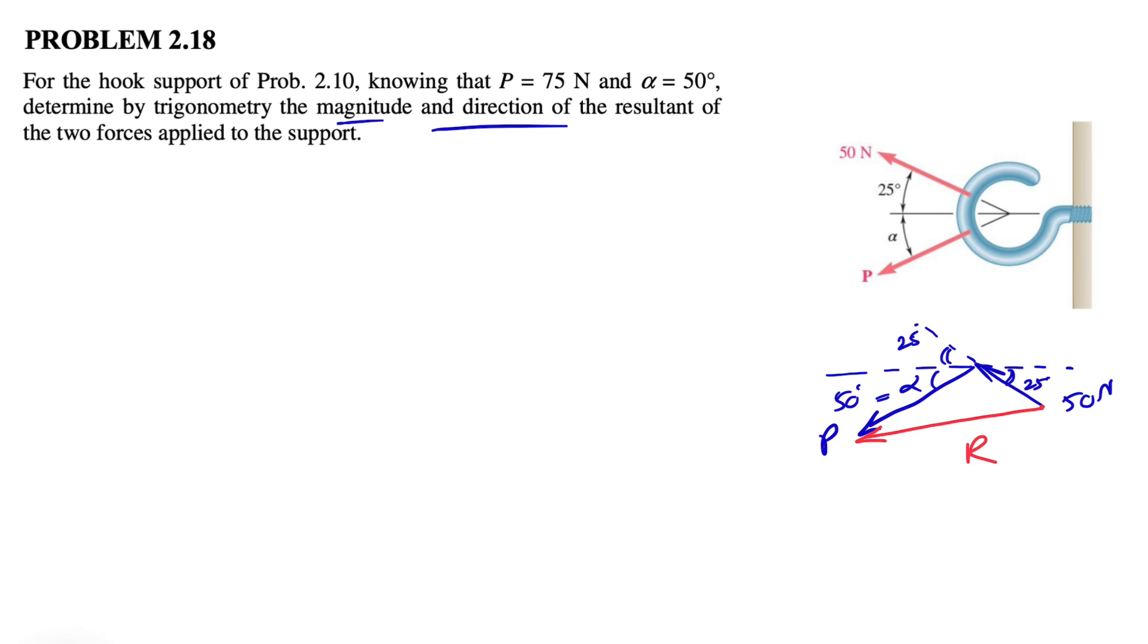We're going to use the law of sine and cosine, but before that, we need to find some angles. If we call this angle here beta, we can add angles easily. The reason is that alpha plus beta plus 25 degrees is going to be 180. So basically, beta is 180 minus alpha, which is 50, minus 25. So beta would be 105 degrees.